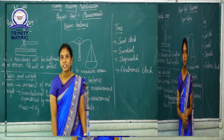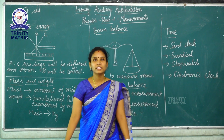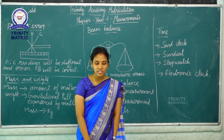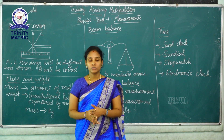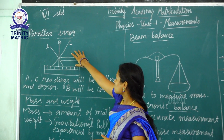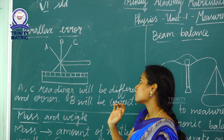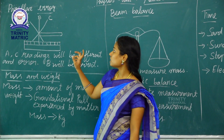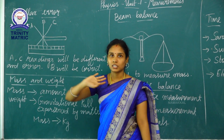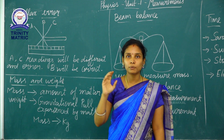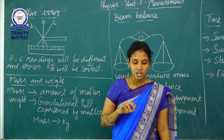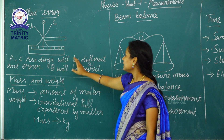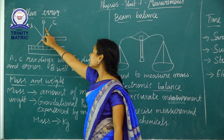Next we have to see parallax error. Parallax is the displacement or difference in the apparent position of an object viewed along two different lines of sight. To avoid parallax error, the eye must be vertically above the object. Readings from positions A and C will be different and in error; reading from position B will be the correct measurement.